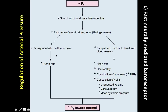Increasing sympathetic outflow — the fight-or-flight system — causes multiple effects: increased heart rate, increased contractility, and vasoconstriction of arterioles, which increases total peripheral resistance. We also see constriction of veins, which decreases unstressed volume, increases venous return, and increases mean systemic pressure. The big picture is that all of these effects together raise arterial pressure and normalize it during acute hemorrhage.